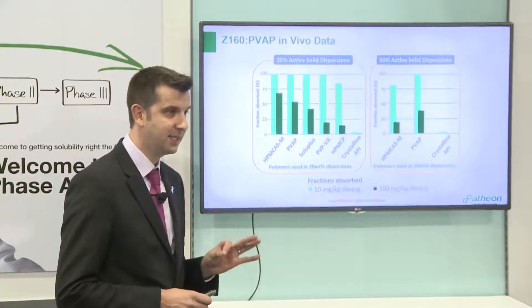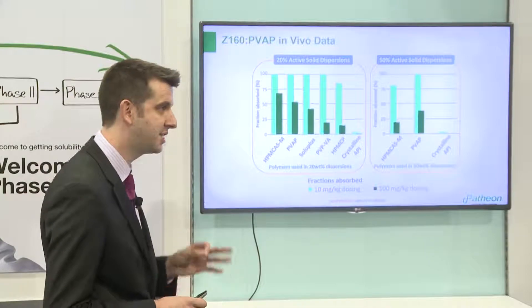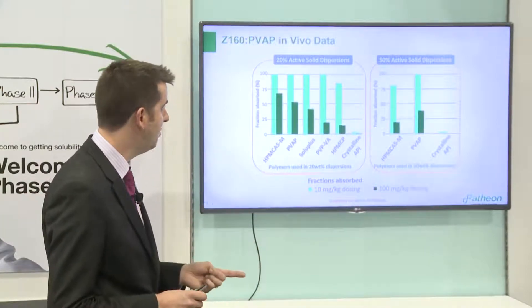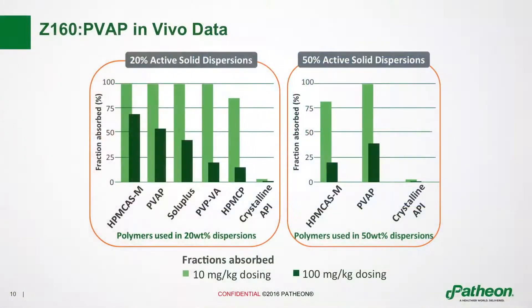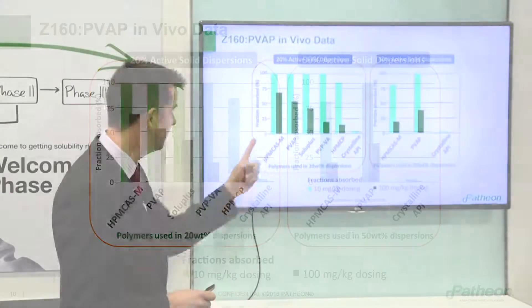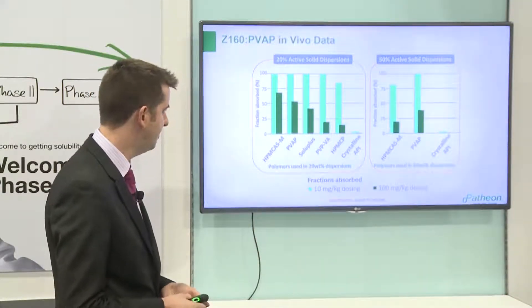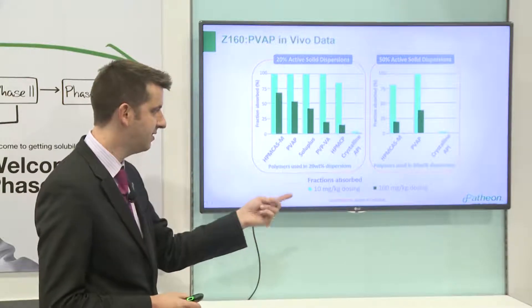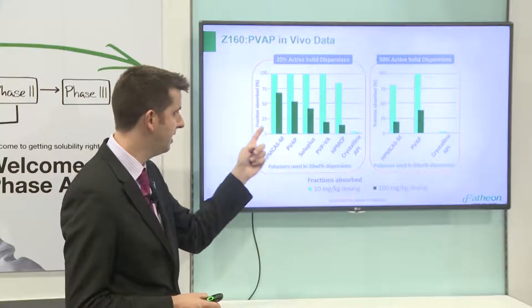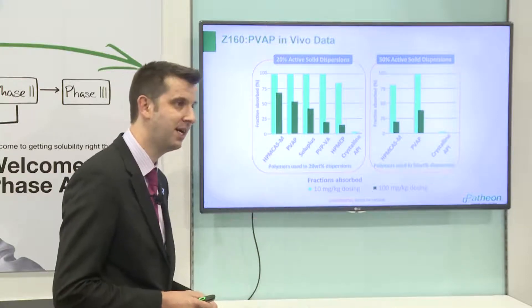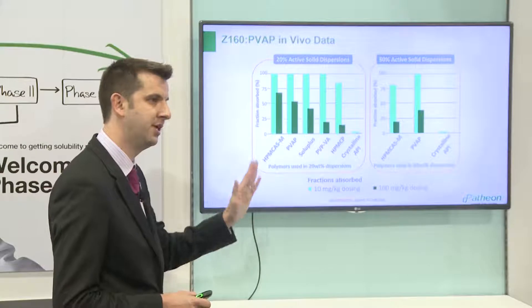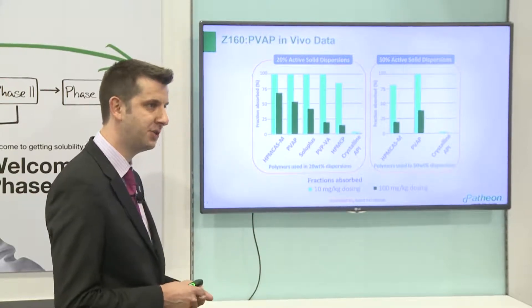One of the really nice things about this case study is we have some in vivo data to go with the in vitro data. With our 20% solid dispersions at low doses, we're getting an amazing fraction absorbed compared to the crystalline API. You can see how much the solubility improvement and the area under the curve improvement has really improved the fraction absorbed, which is after all the goal of this program. At higher doses there's still an amazing increase compared to the crystalline API but there's also a different rank order, and we can correlate that back to the dissolution data shown at the start.